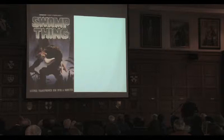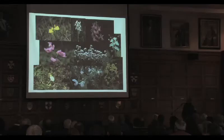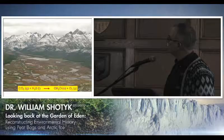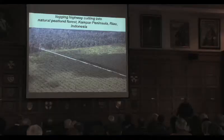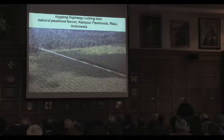Unfortunately, bogs have had a bad reputation. Shakespeare must have had a bad bog experience: 'Those that ride not warily fall into foul bogs.' In fact, what we're finding is they are really amazing archives — probably our best continental archives of many aspects of environmental change — and they're also very beautiful. Bogs are also very important carbon reservoirs and have been removing CO₂ from the atmosphere for a long time. This is a tropical peat swamp in Indonesia, and this is what it looks like after it's deforested, drained, and planted to date palm — we're certainly losing large extents of peatlands worldwide.